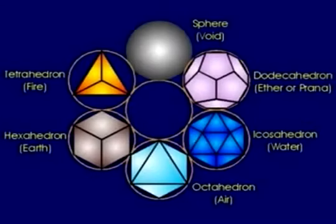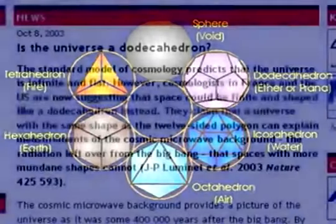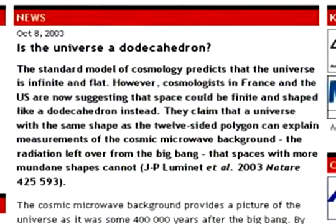Each Platonic solid is also associated with an element, although these connections I consider to be subjective at this point. The ether, for example, is known to be a formless, omnipresent, immaterial substance, and thus being associated with a geometric shape doesn't quite work. It has been postulated that the dodecahedron is actually associated with the heavens, or cosmos, and interestingly, cosmologists in France and the US suggested that the universe may actually be in the shape of a dodecahedron, based upon their study of the cosmic microwave background radiation.